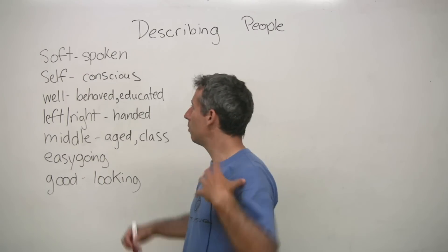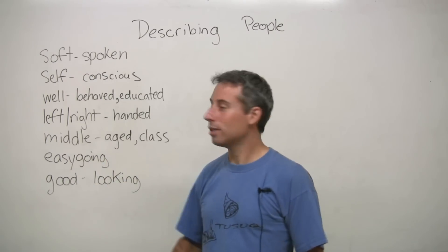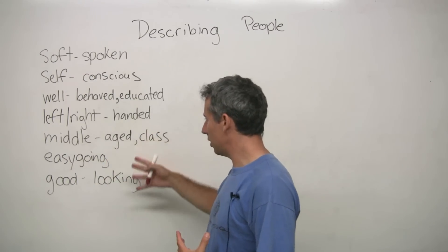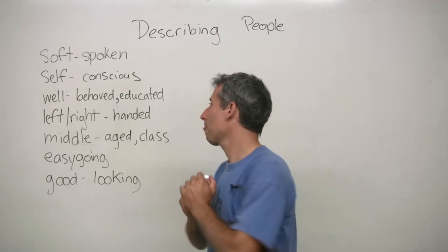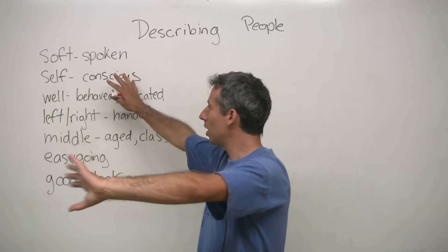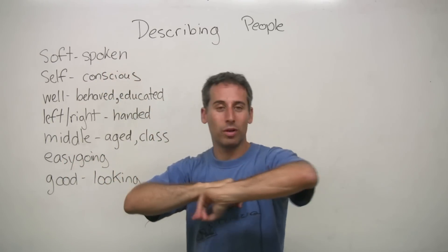Okay, so I think we'll just go through it. I've got seven words that we can use to describe people. All right, so let's start with the top one.